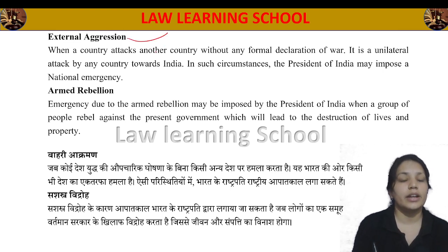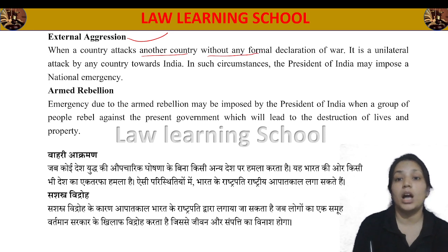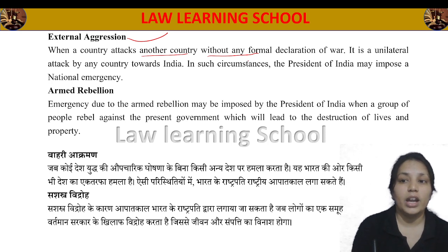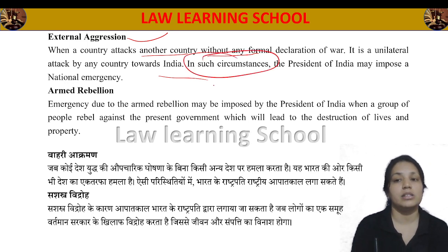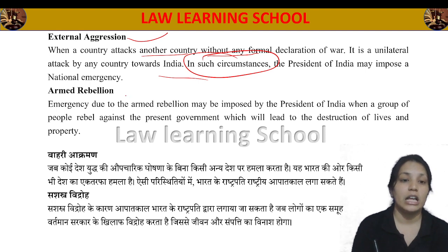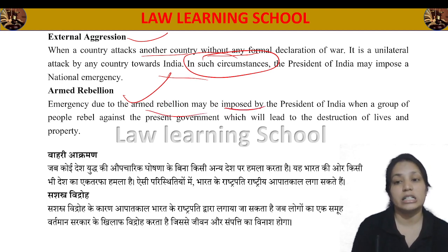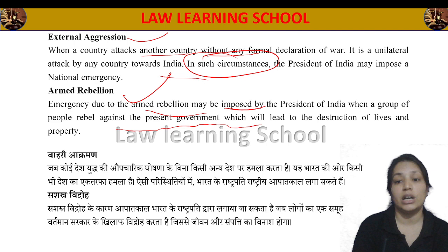External aggression means a unilateral attack by a country toward India without any formal declaration. Under such circumstances, the President of India imposes National Emergency. The third ground is armed rebellion — when there is internal aggression, Emergency due to armed rebellion may be imposed by the President of India where a group of people rebel against the present government. There also, the President of India can impose emergency.